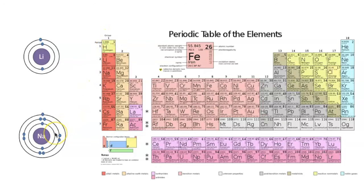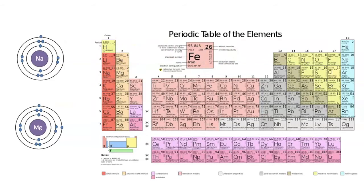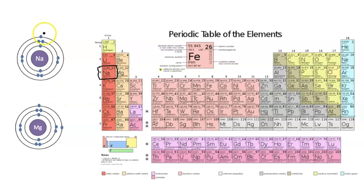And if we look at sodium, we see that sodium is in period three. It has three energy levels, but still, because it's in group one, it has one valence electron. Now let's compare sodium to magnesium. Sodium is a group one element in period three. It has one valence electron and three energy levels.